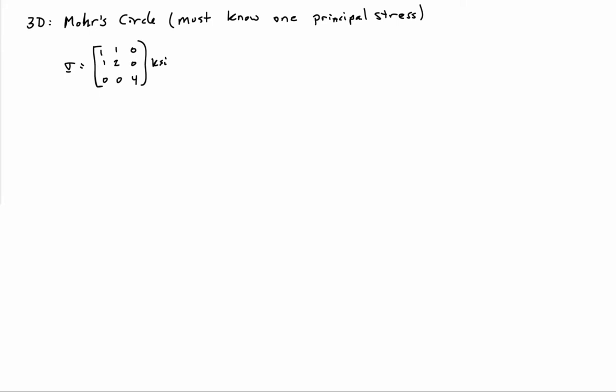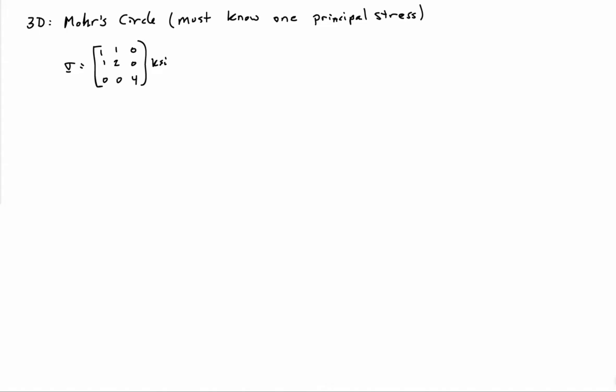Let me consider this state of stress. In the XY plane, I have a normal stress of 1 KSI and 2 KSI, and a shear stress of 1 KSI. And then I have a normal stress in the Z direction of 4 KSI. But there's no shear on the Z plane, and that tells me that the Z direction is already a principal direction of stress. Whenever you have zero shear on a plane, you know that plane is already oriented in a principal direction.